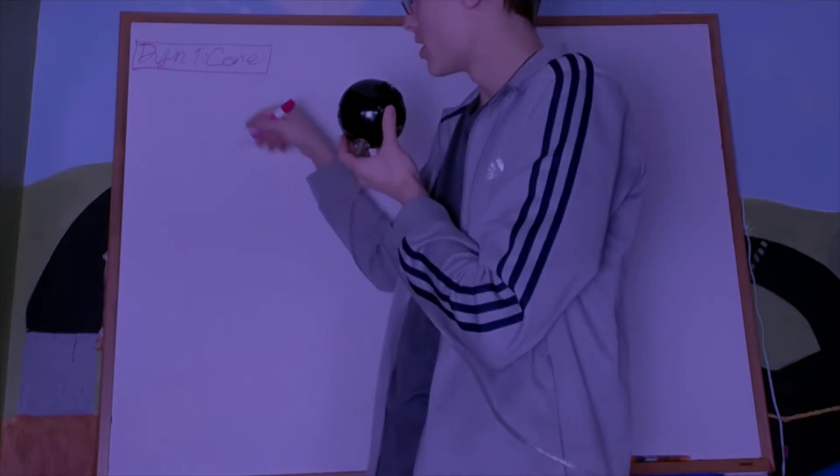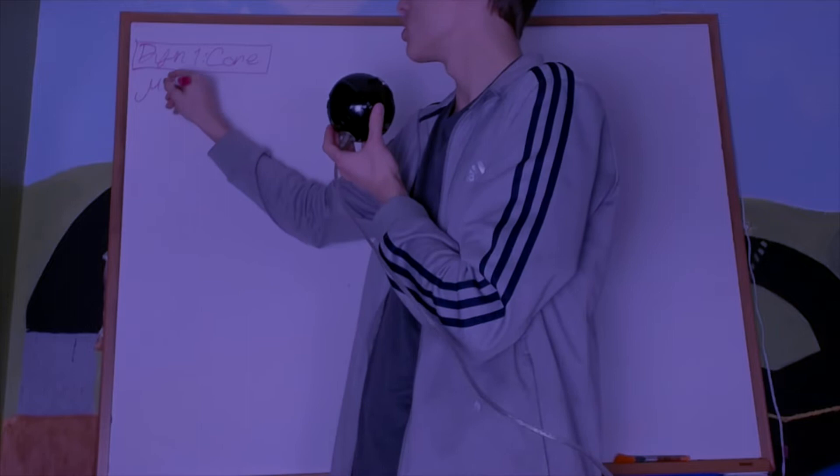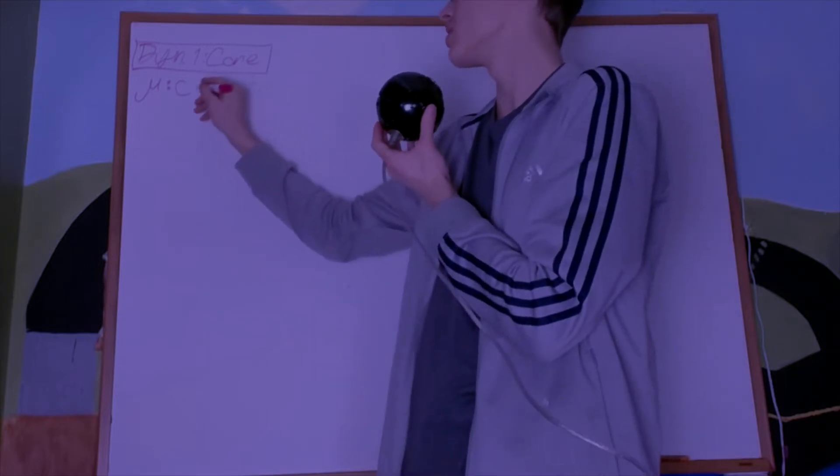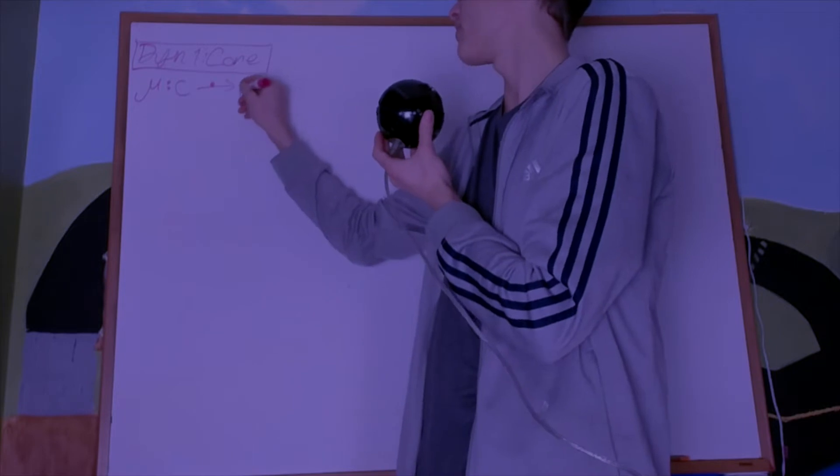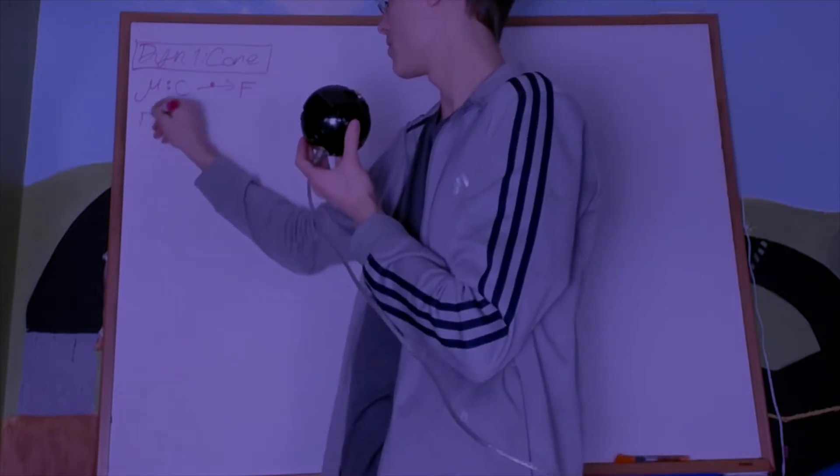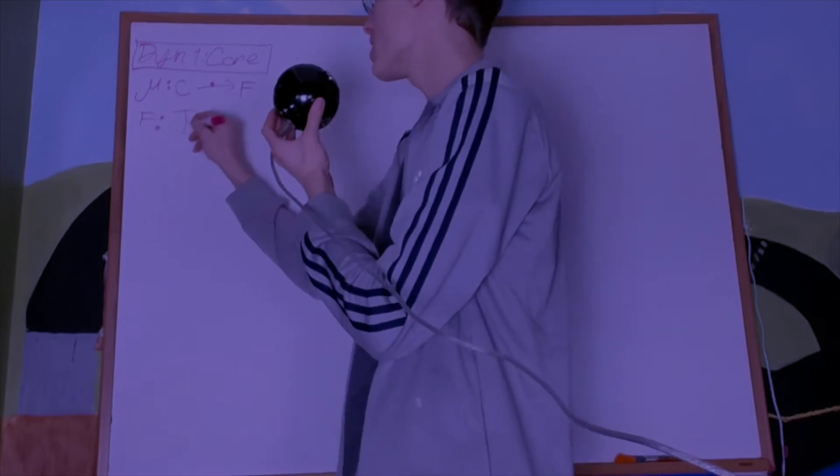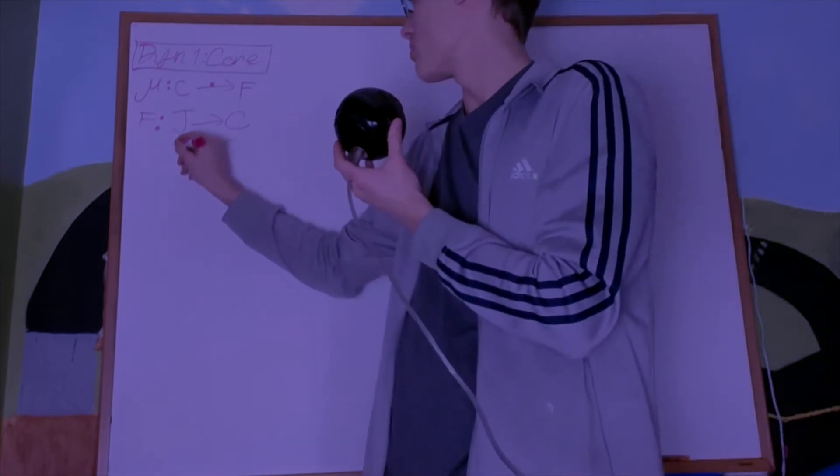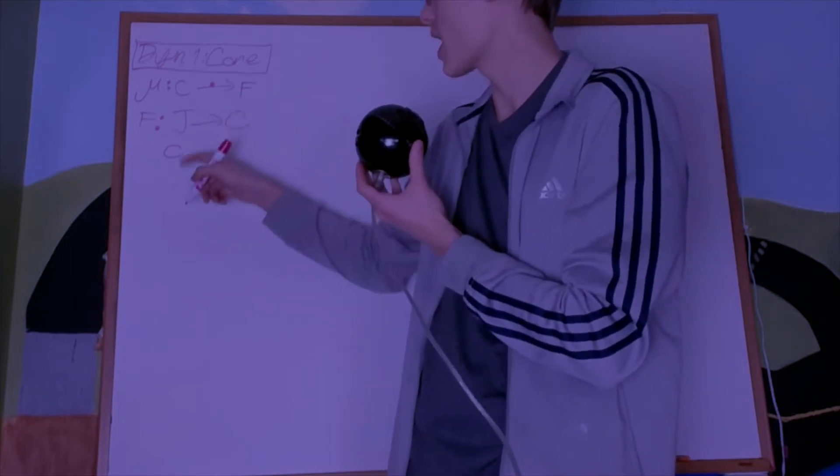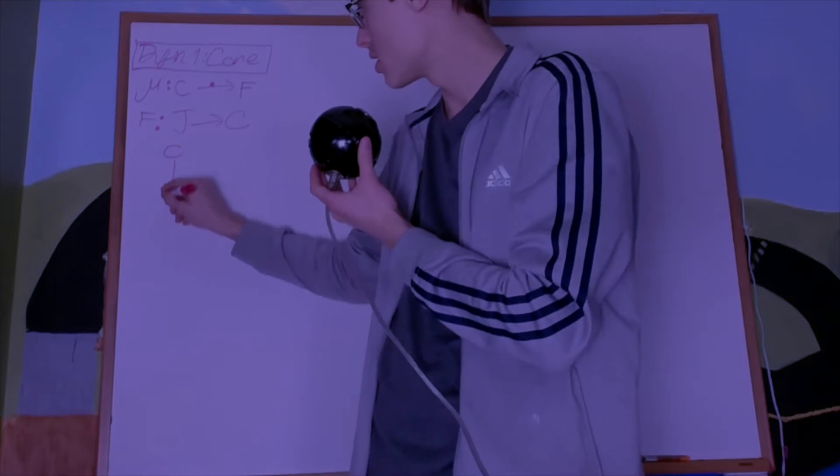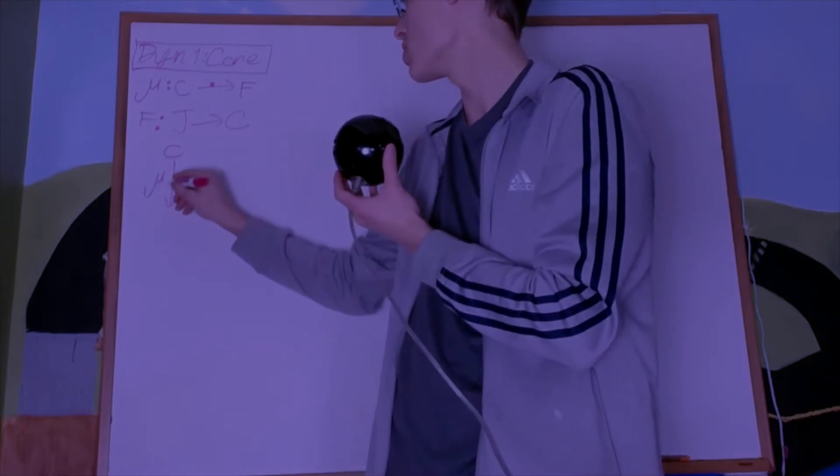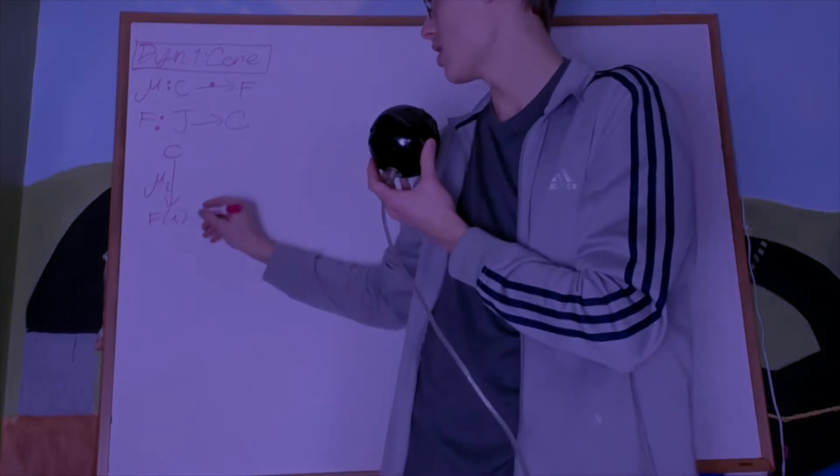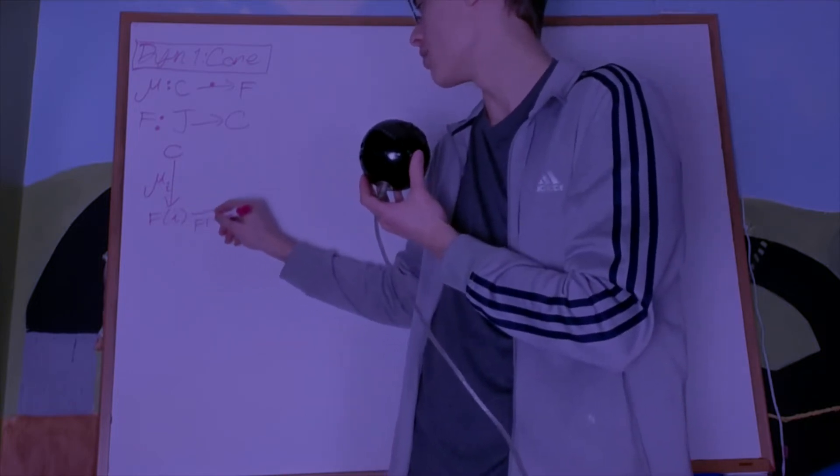A cone is a natural transformation. A cone will be something that goes from the constant functor C into a functor F. So if I have F, a functor from J to C, then a cone will be something that goes from the constant object C down via a component mu_I down to F of I.